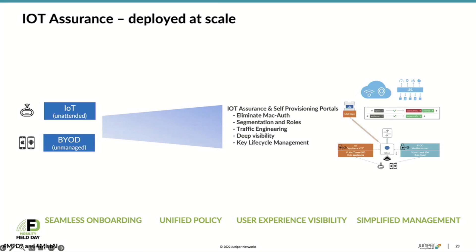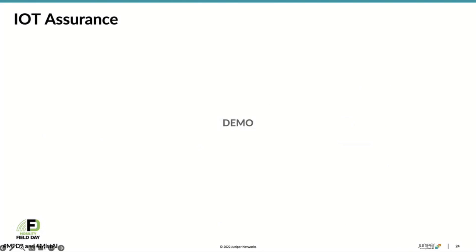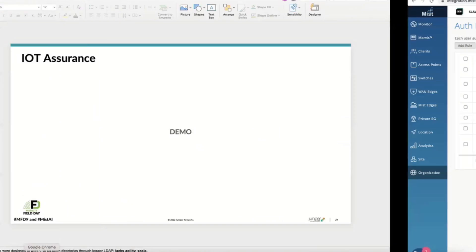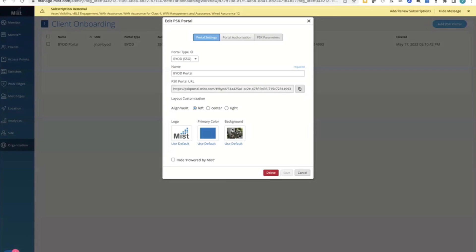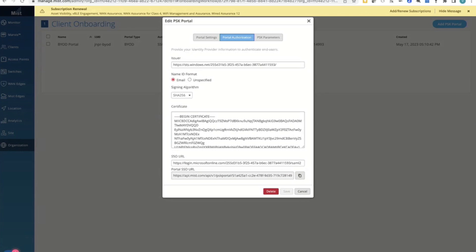One thing we haven't shown yet was the self-onboarding or self-provisioning aspect of IoT Assurance, which is relevant to the BYOD use case — how are users able to get themselves a unique personalized PSK? What we have here is a concept of a PSK portal that is connected to a single sign-on. In this case, this is Azure with a standard SAML connector, so it will integrate into any IDP whatsoever.